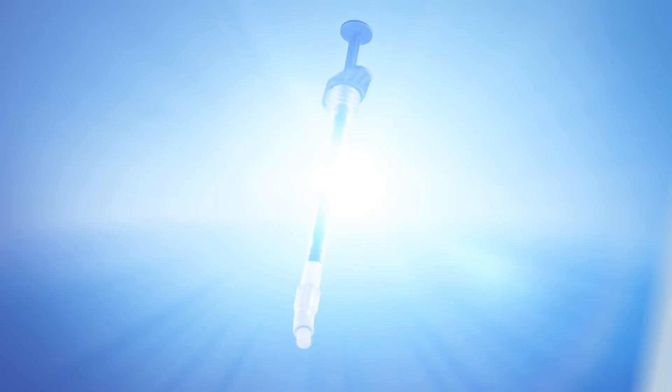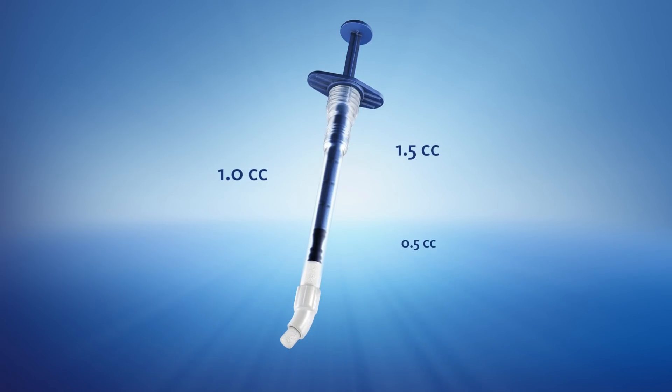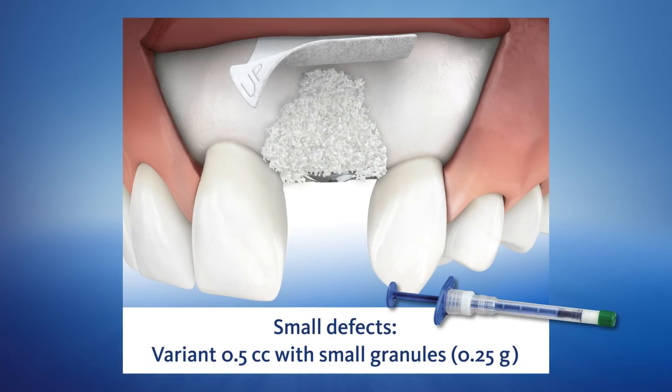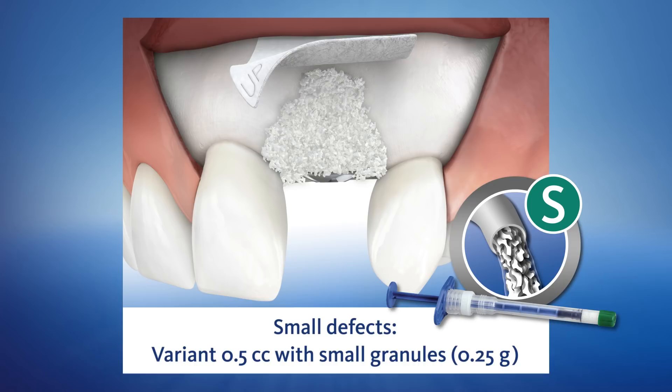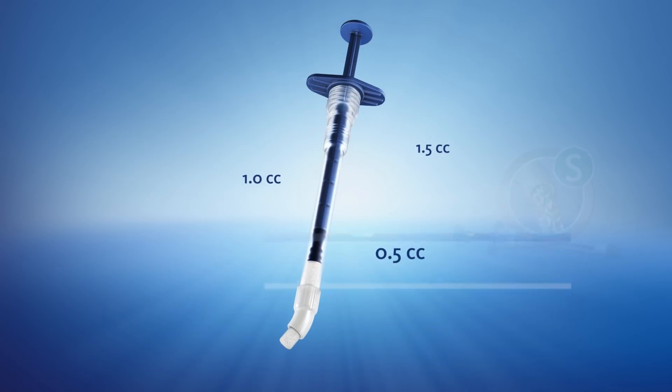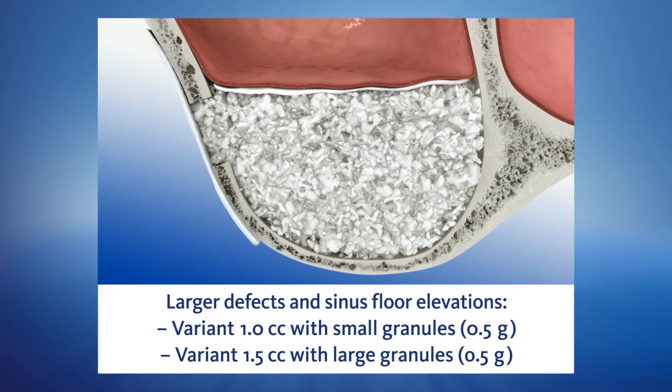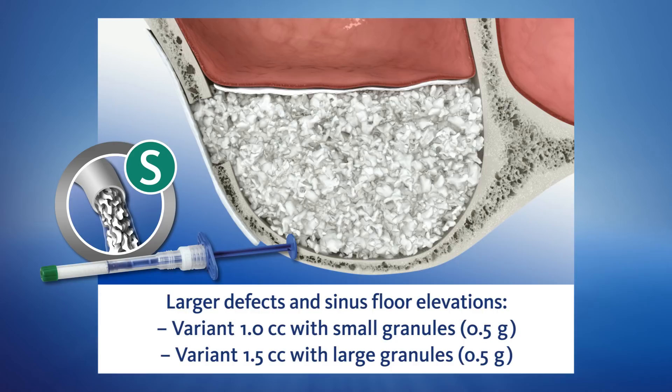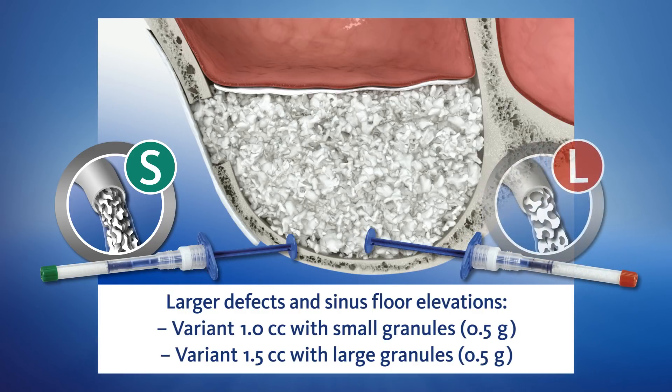The Geistlich BioAos pen is available in three variants. The 0.5 cc variant with small granules for small defects. And for larger defects as well as sinus floor elevations, the 1.0 cc variant with small granules or the 1.5 cc variant with large granules.